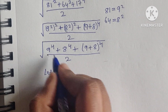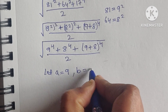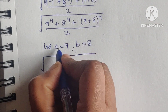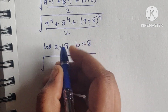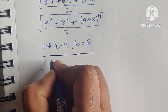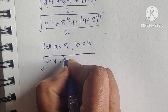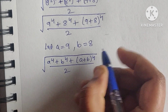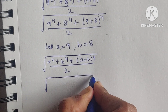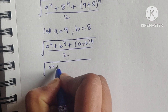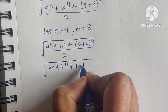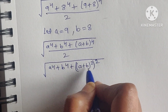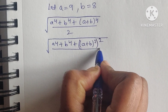Let us consider a equals 9 and b equals 8. So in place of 9 we write a and in place of 8 we write b. This gives us the square root of a to the power of 4 plus b to the power of 4 plus a plus b whole to the power of 4 divided by 2. We can expand (a plus b) to the power of 4 as a to the power of 4 plus b to the power of 4 plus (a plus b) squared, whole squared, divided by 2.